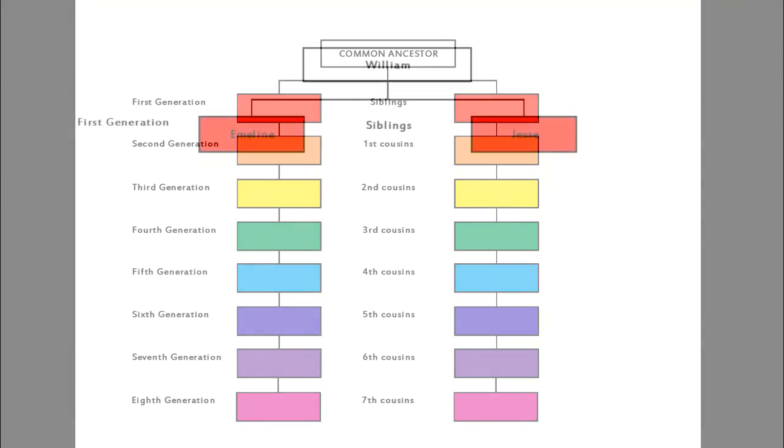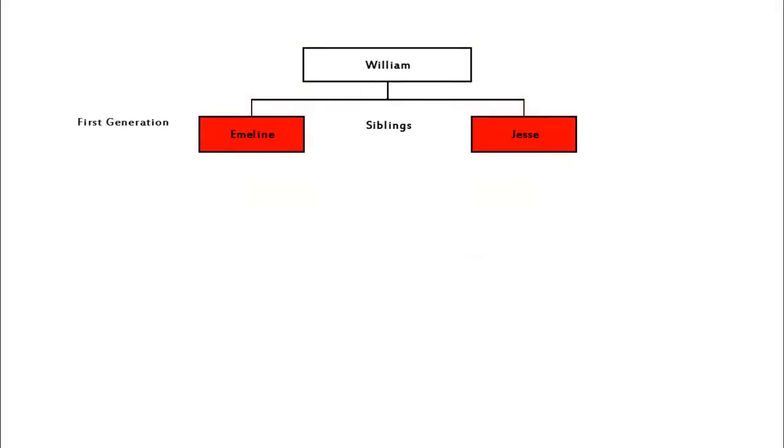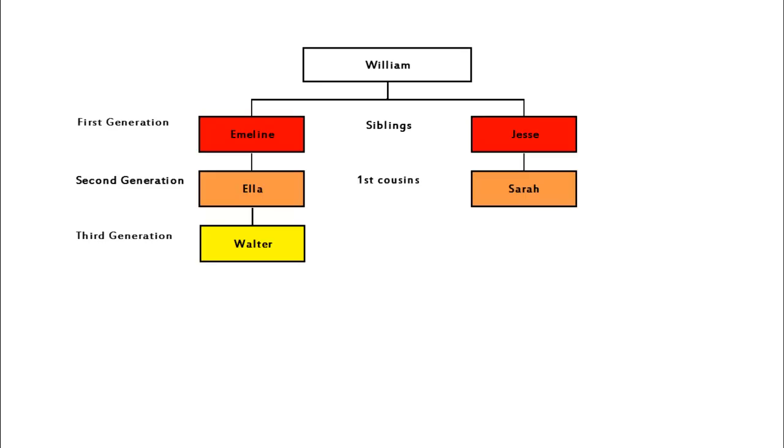Let's look at an example. In this chart, William is the common ancestor. His children Emmeline and Jesse each have a child. Their children, Ella and Sarah, are first cousins. Ella has a son, Walter. How then are Walter and Sarah related?